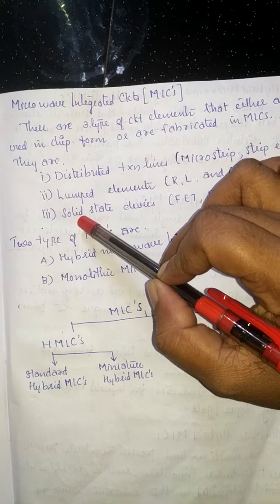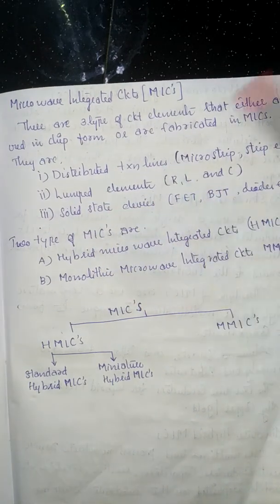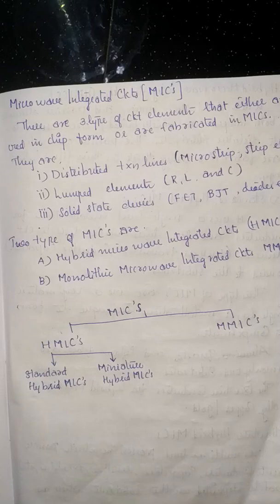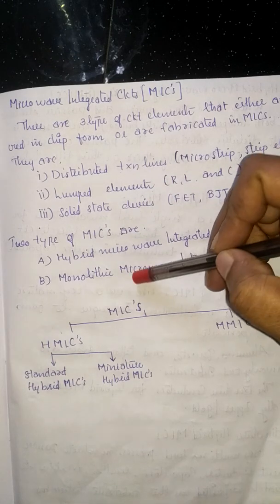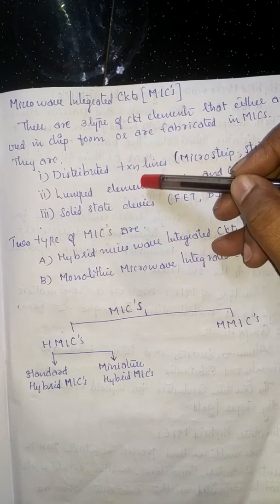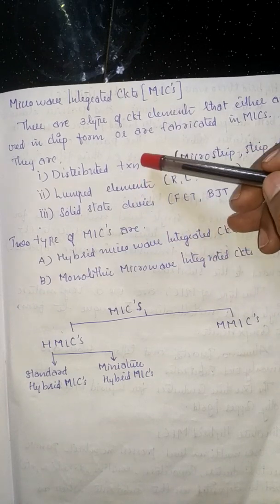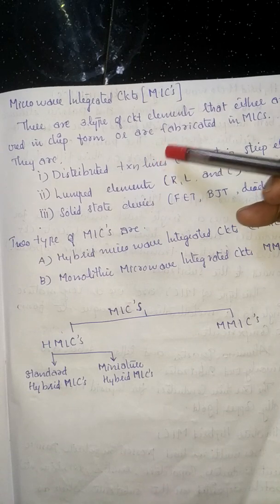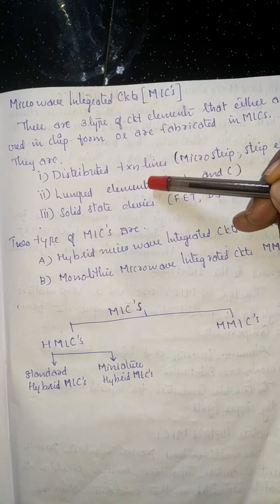The third element is solid-state devices. Solid-state devices within electronics include FETs, BJTs, and diodes. So these three elements — distributed transmission lines, lumped elements, and solid-state devices — are contained within a single MIC chip.